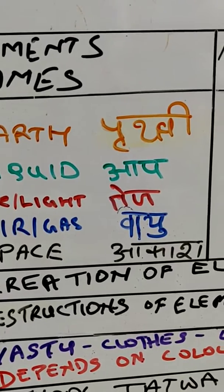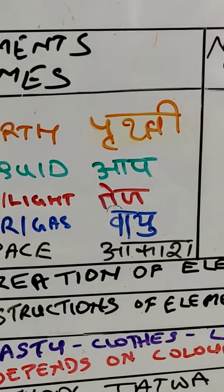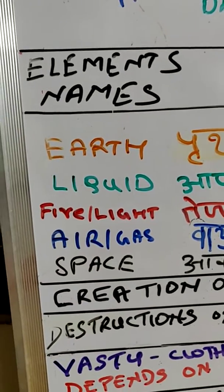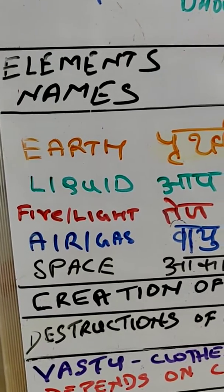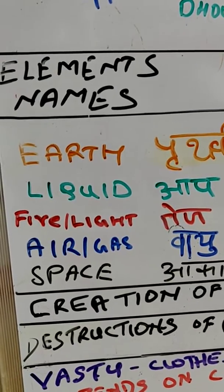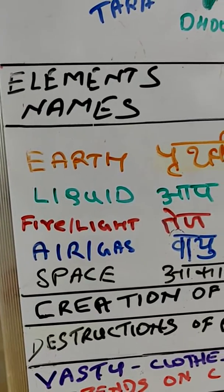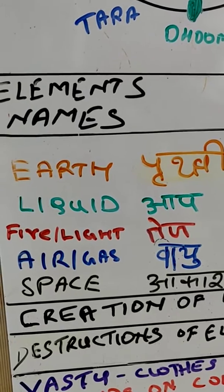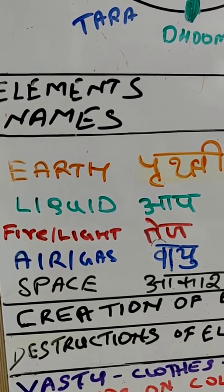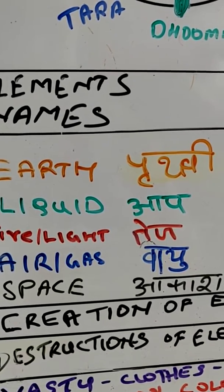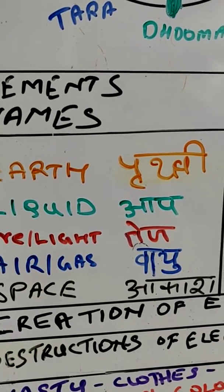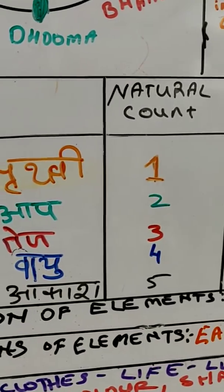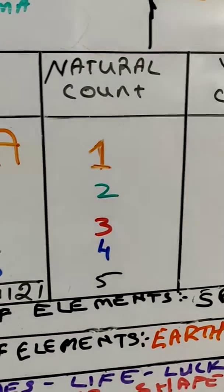You have to remember and memorize: Prithvi, Ap, Tej, Vayu, Akash. You will only be able to memorize this if you are regular with your practice, because theory is made proper by practice. So keep practicing. Now, these elements in the universe and in our body have a natural count, because you have to balance them.